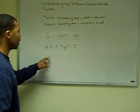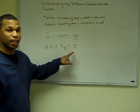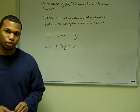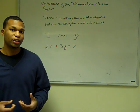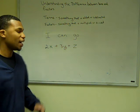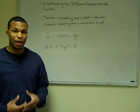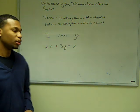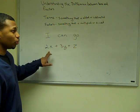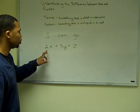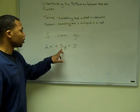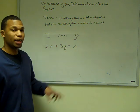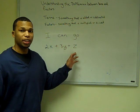So in the expression, our terms would be 2x, 3y, and z. Inside of individual terms, you have factors — just like inside of individual words you have letters. So the letters, so to speak, would be our factors. In term 1, our factors would be 2 and x. In term 2, it would be 3 and y. And in term 3, it would just be z.